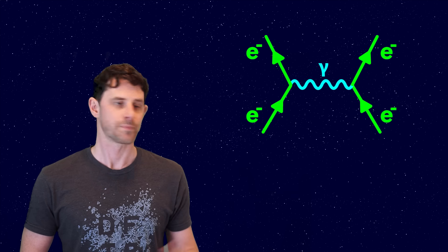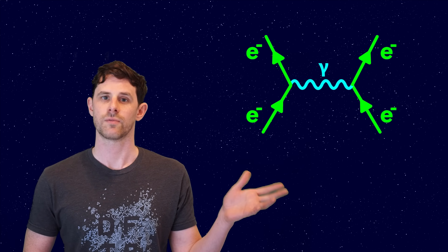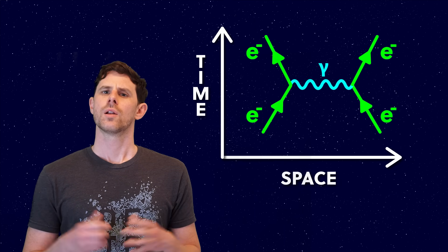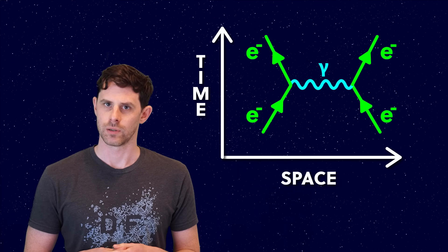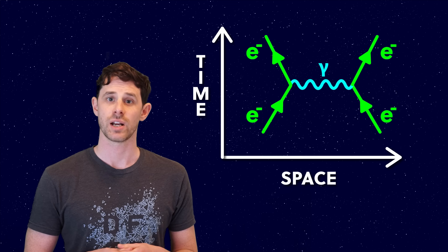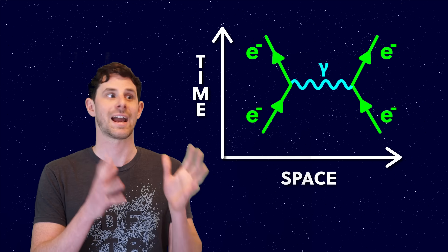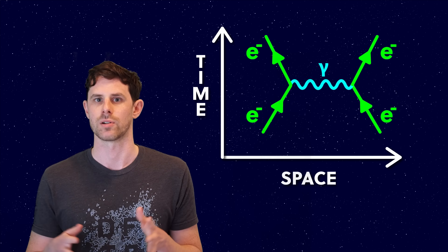Here's a Feynman diagram. The lines represent different particles which are travelling through space and time, which are represented by these axes. Note that with one dimension of space we're losing some spatial information here, so these really are schematics of what a particle interaction looks like, rather than an accurate depiction of our four-dimensional reality.